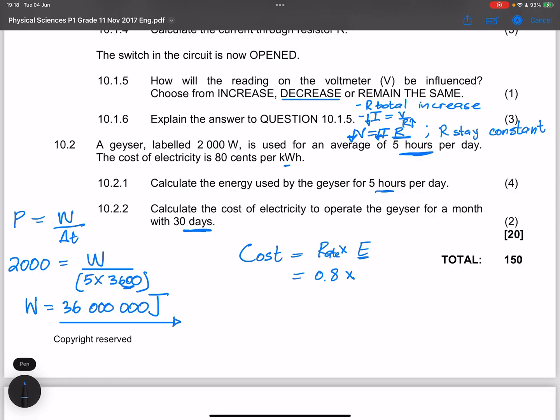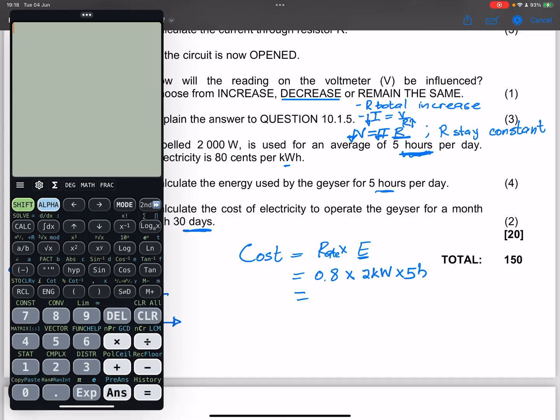So the energy is 2,000 watts, but we need to convert that to kilowatts. So 2,000 watts is 2 kilowatts. Kilo means 1,000. So this would be 2 kilowatts. But now we need to express the time in hours multiplied by the time, which is 5 hours per day. So this would be 2 kilowatt multiplied by 5, which is in hours. This is the cost per day. So let's do that quickly. That's 0.8 times 2 times 5. So that gives me 8 rands per day.